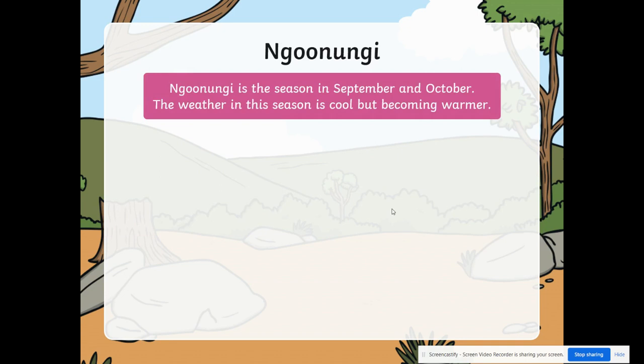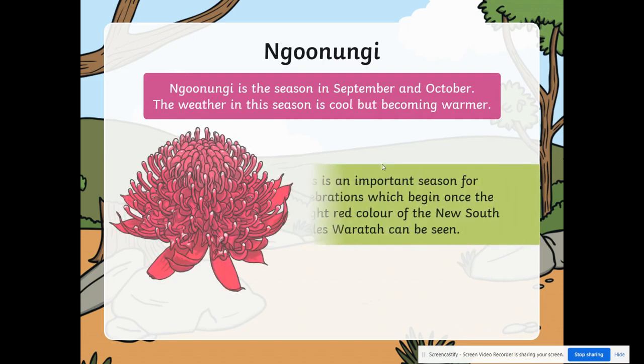Nguungungunggi is the season in September and October. The weather in this season is cool but becoming warmer. This is an important season for celebrations, which begin once the bright red colour of the New South Wales Waratah can be seen.